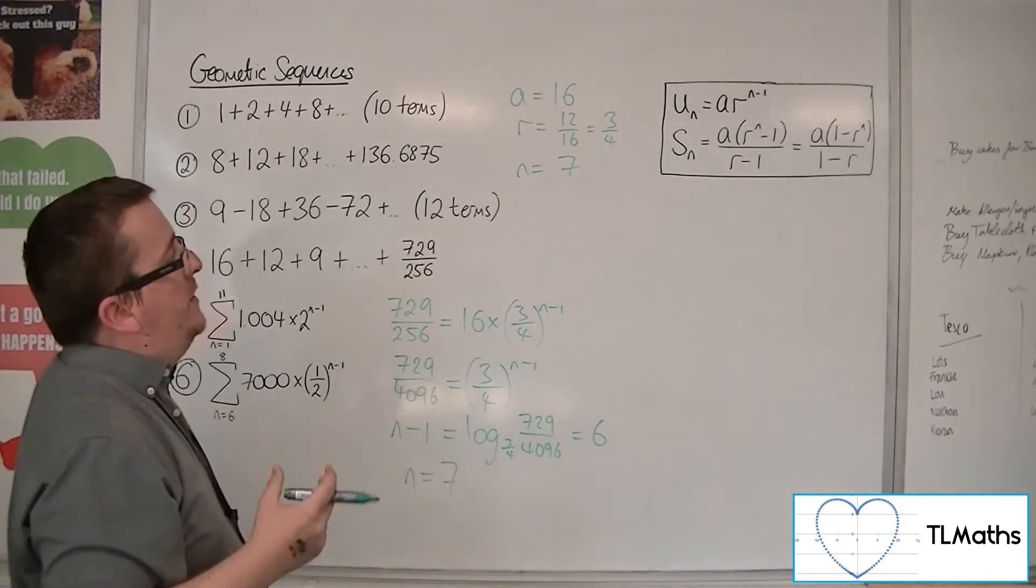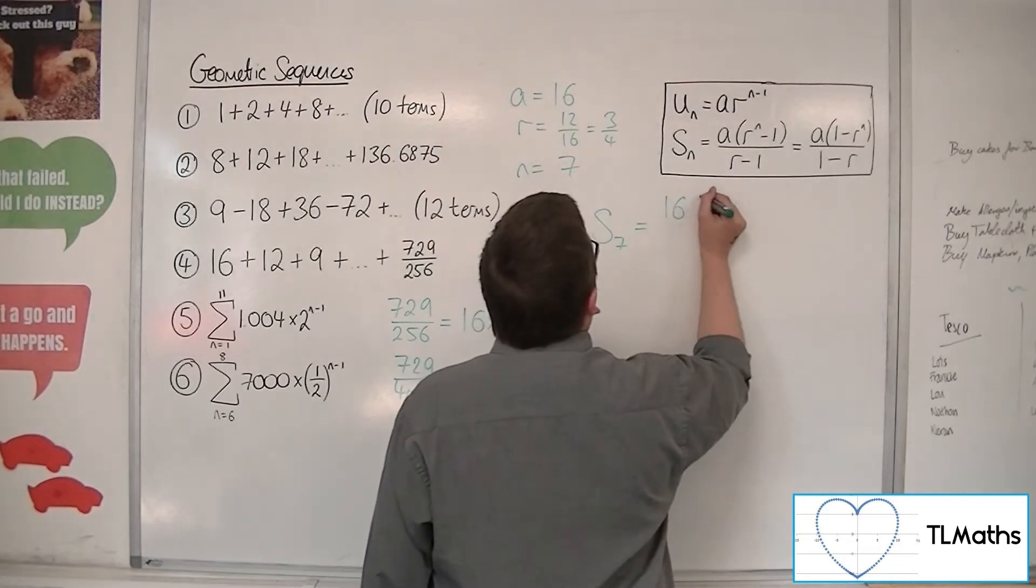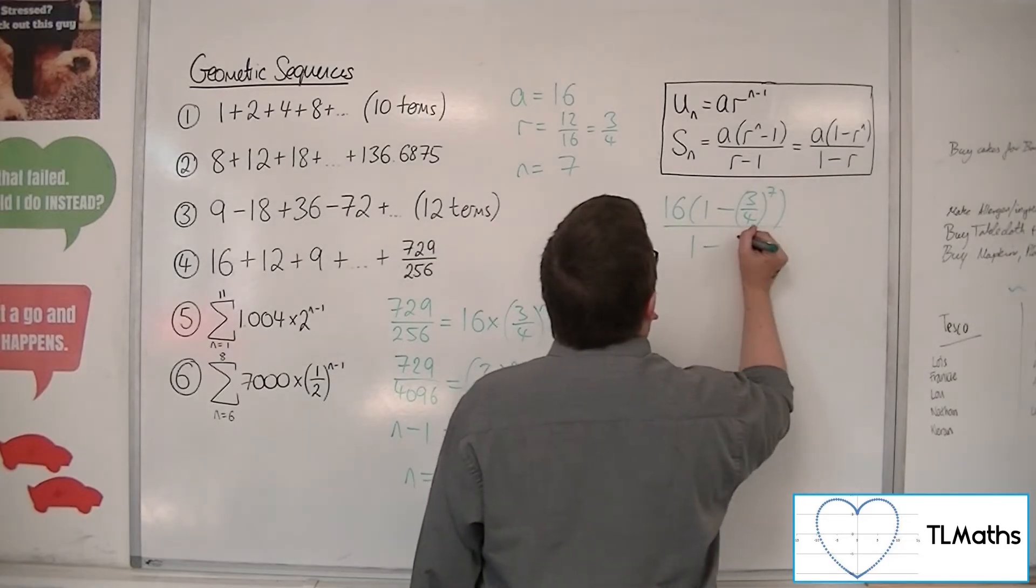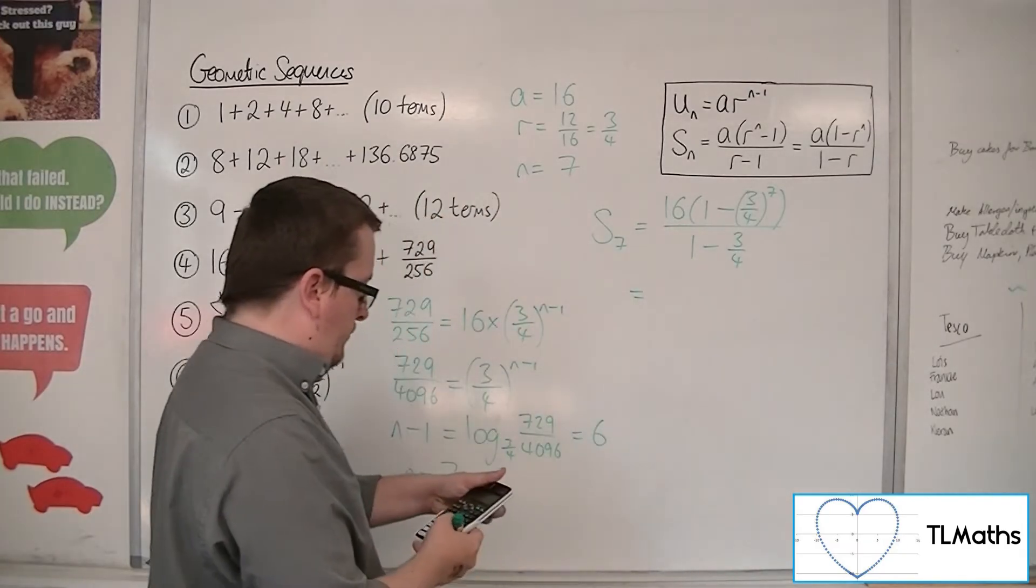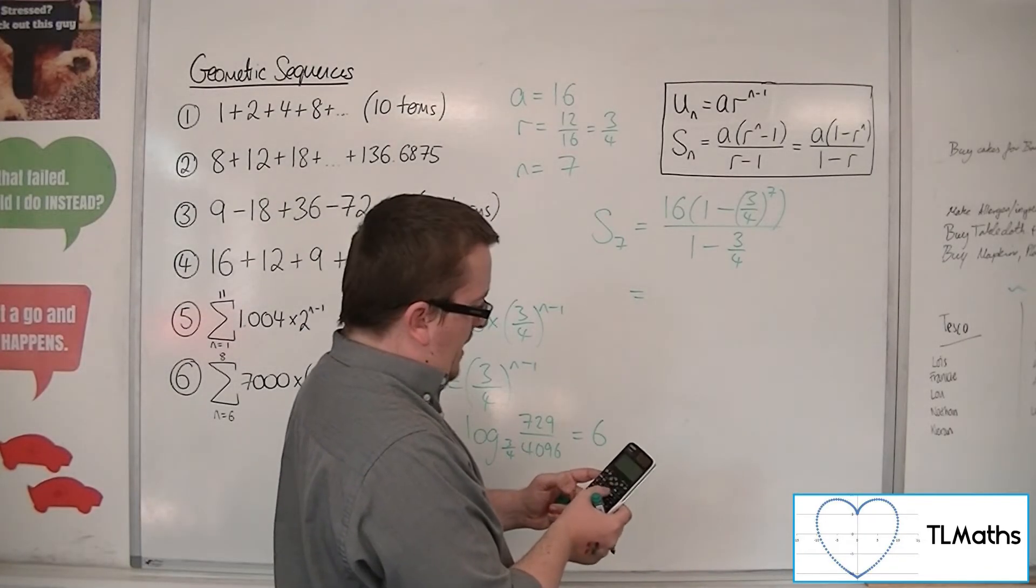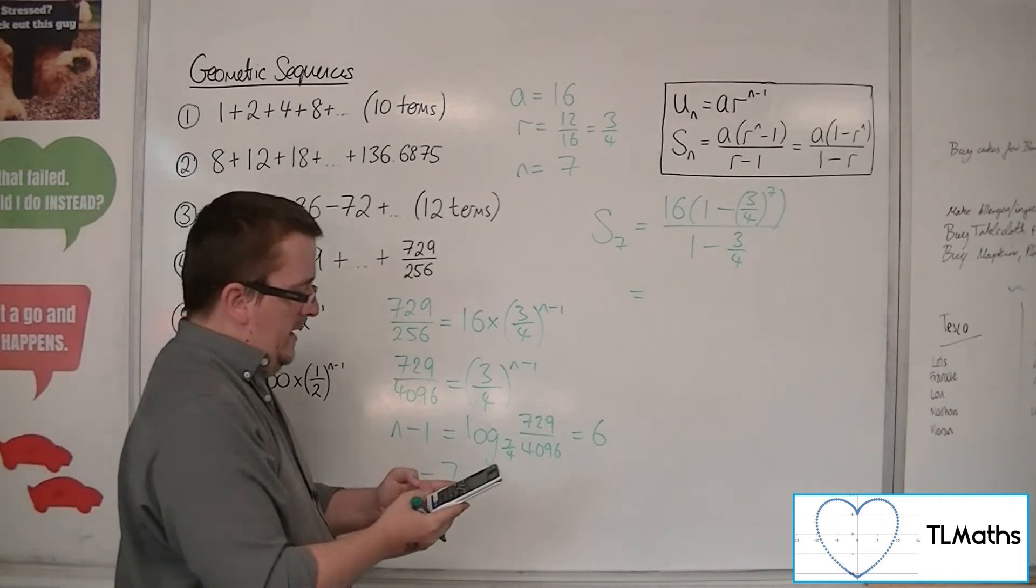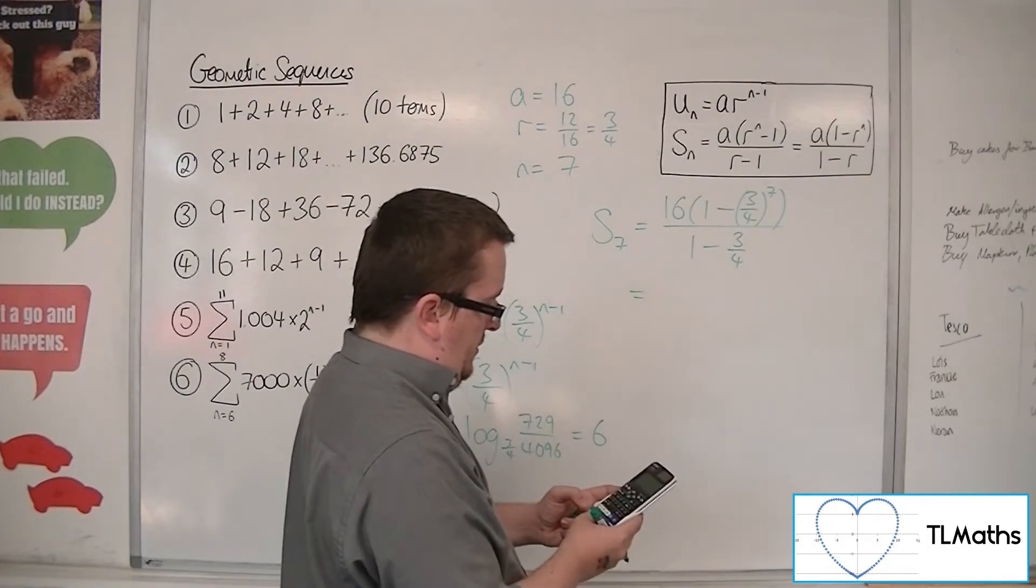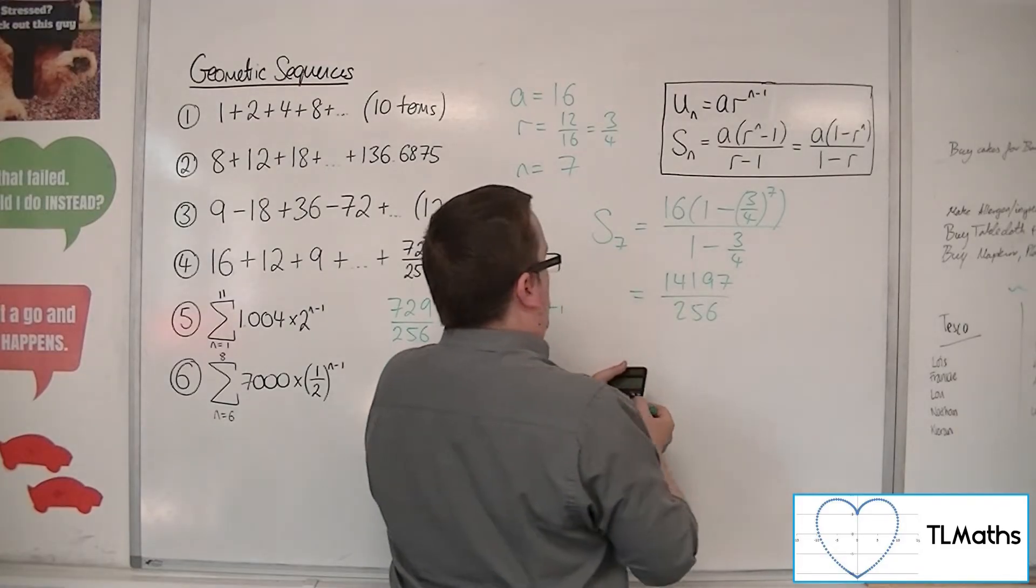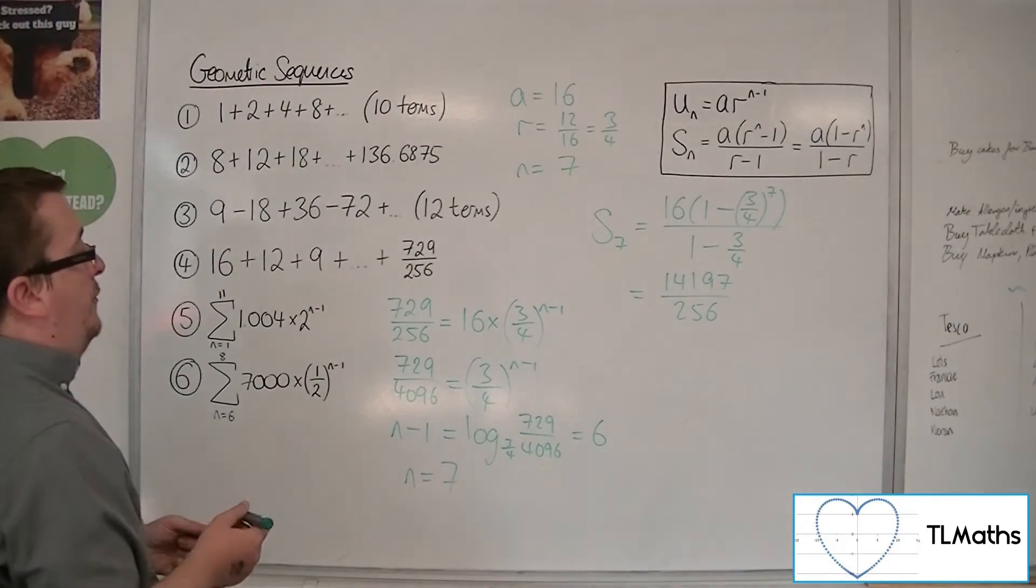So we can now go into one of these two formulas. I'm going to go into the second one again now. So S7 is equal to a, so 16, lots of 1 minus 3 quarters to the n, so 7, all over 1, take away 3 quarters. So in the numerator, we have 16, lots of 1, take away 3 quarters to the power of 7, which is 13.86425781. And I'm dividing that by 1, take away 3 quarters, which is 14197 over 256, which is 55.457 to 3 decimal places. And that is your answer for number 4.